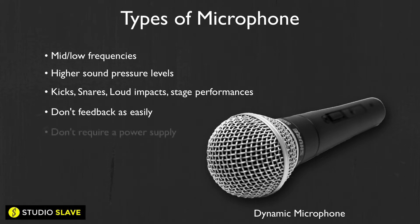Dynamic mics don't need to be powered, however condenser mics do. The reason for this is that with dynamic mics the diaphragm is large enough that when it moves, the voltage produced is sufficient to use straight away. A condenser mic has only a small diaphragm, so the signal needs to be amplified — which is why we need phantom power.